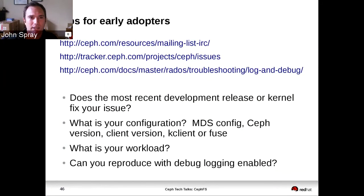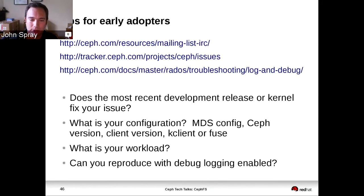If you are trying out CephFS right now as an early adopter, make sure you know the mailing list, the IRC channel, the issue tracker, and the documentation including troubleshooting documentation. When you encounter an issue, check whether the most recent release fixes it, because stuff is getting fixed all the time — including in the kernel if you're using the kernel client. When reporting an issue, tell us as much about your configuration as you can, especially what versions you're using, whether you're using the kernel client or the FUSE client, and what kind of workload you're doing. If you can reproduce an issue with debug logging enabled, that makes for a really good trouble ticket.